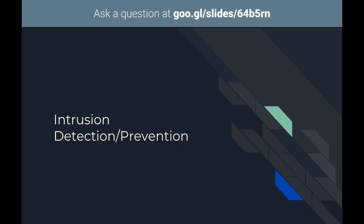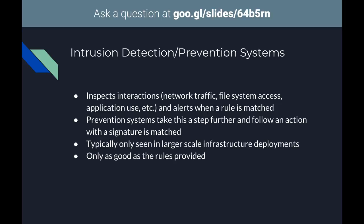On to intrusion detection and prevention. You likely won't encounter these in small companies — they don't see the need or want to pay the maintenance cost. With all IDS/IPS solutions you also have to provide a rule set and someone to maintain it — it's not a set-and-forget solution unless you buy a vendor product, which is probably expensive. What an IDS/IPS does is inspect any interaction — network traffic, file system access, application use — and alert when a rule is matched.